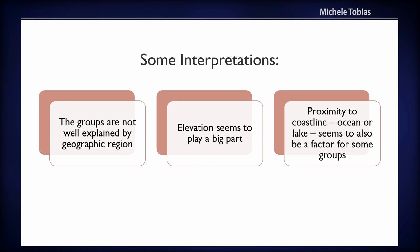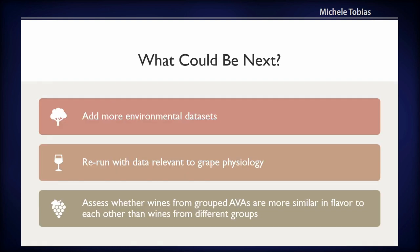What could be next? This is really a first pass at answering this question — you could spend a lot more time exploring this dataset. One thing that could be interesting would be to add in more environmental datasets. For example, with the soil data I'm just using sand, silt, and clay in the top part of the soil column — you could certainly go deeper into that and add more Polaris variables like soil organic matter.